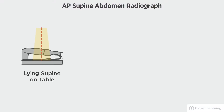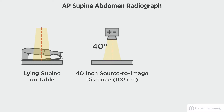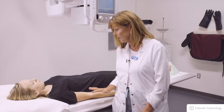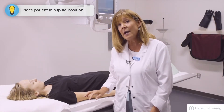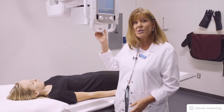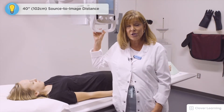In this view we will be demonstrating an AP supine abdomen, also known as a KUB. The AP abdomen should be performed with the patient lying supine on the table with a 40-inch source-to-image distance and no tube angulation. The patient is laying down, I have the IR placed lengthwise, and my locks are engaged.